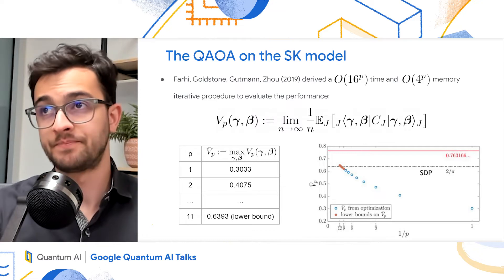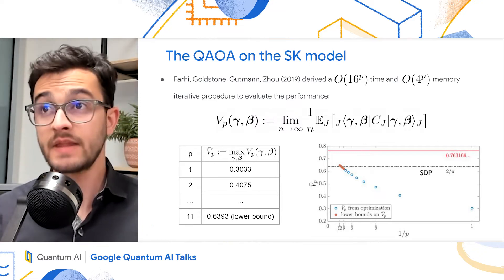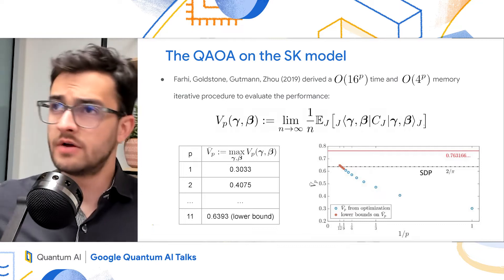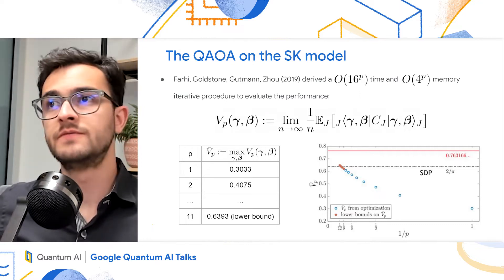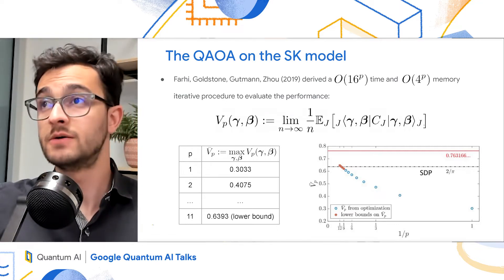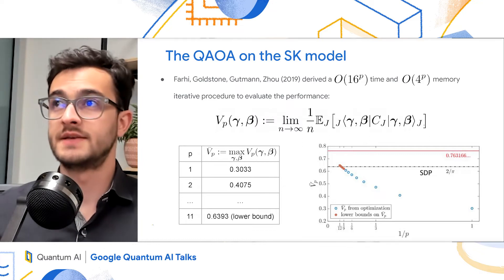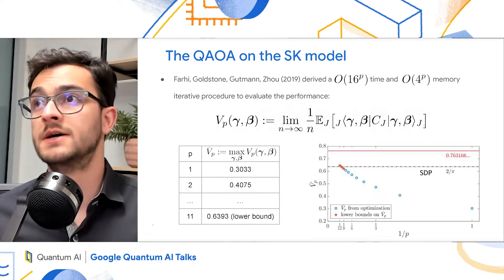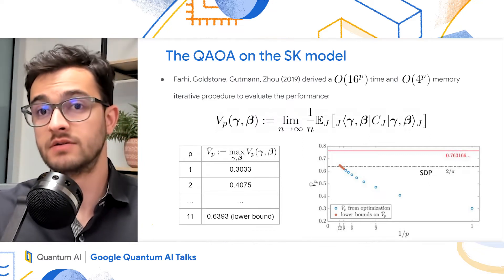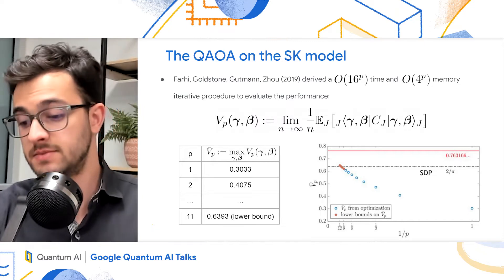So if p equals 1, the QAOA gets to 0.303. If p equals 2, it gets to 0.407. On the right, you can see the plot related to p equals 12. Most notably, at p equals 11, the QAOA surpasses the 2 over pi, which is what SDP gets to.